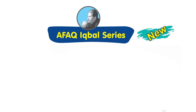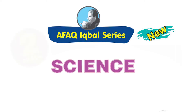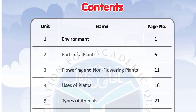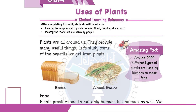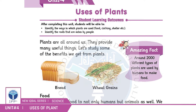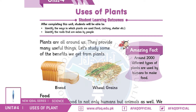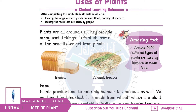Bismillahirrahmanirrahim. AFAD New Iqbal Series, Subject: Science, Class 2, Chapter Number 4: Uses of Plants. Assalamu alaikum students, how are you? In this chapter we are reading about plants and their different uses, like food, clothing, and shelter, and also types of fruits.